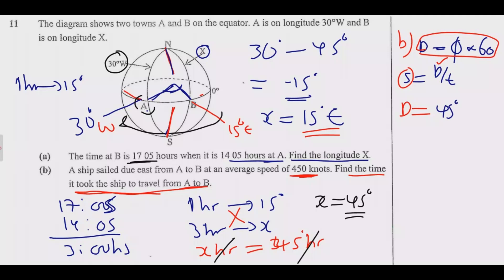So distance is equal to 45 degrees multiplied by 60. So 45 times 0 is 0, 5 times 6 is 30, then we have 0, then we have 24. So what we get is 2,700 nautical miles. This is the distance.